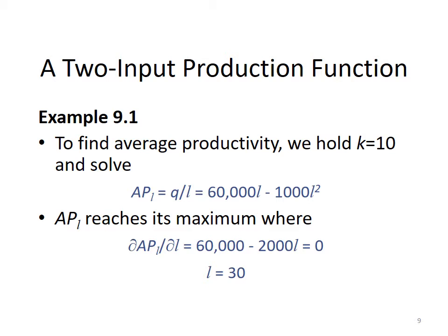Now for part two, we find Average Physical Productivity of Labor. Holding K constant at 10, we have q = 60,000L² − 1000L³. Average productivity is calculated by dividing by the number of labor units L. Dividing: 60,000L²/L = 60,000L, and 1000L³/L = 1000L². So APL = 60,000L − 1000L².